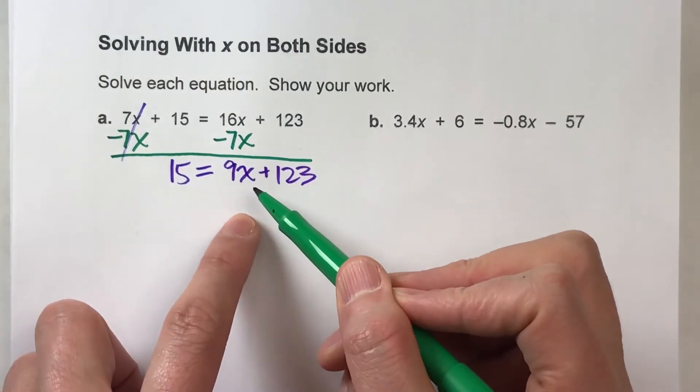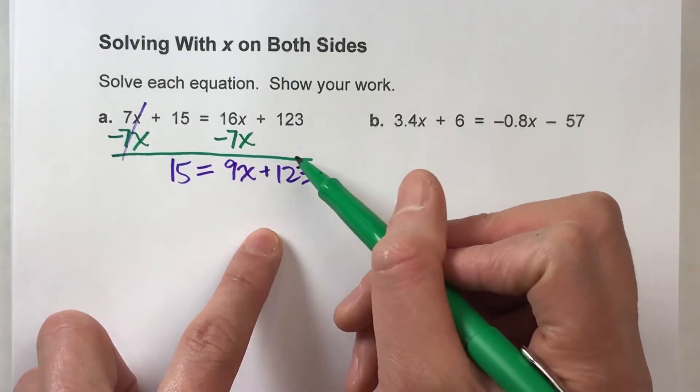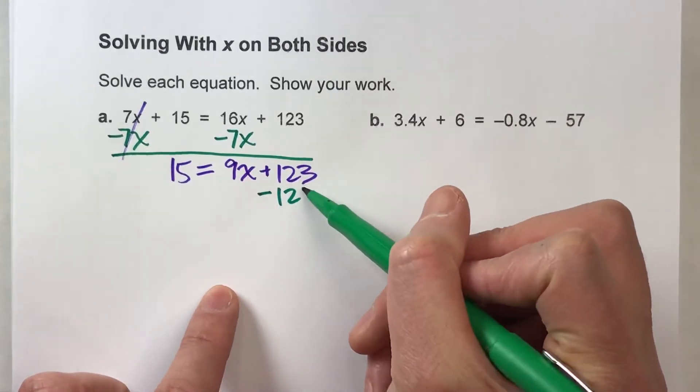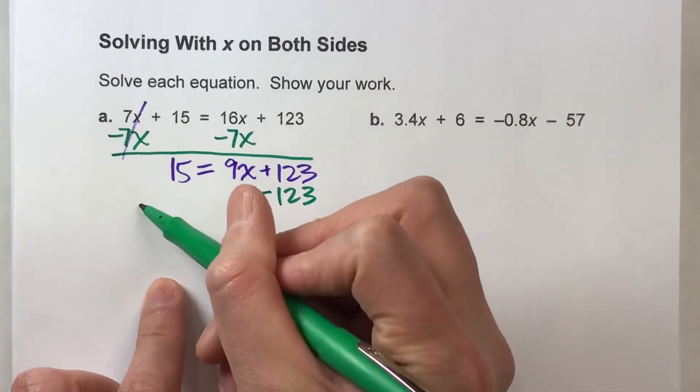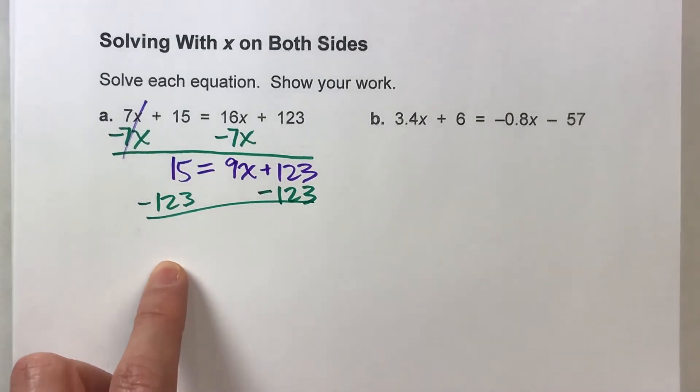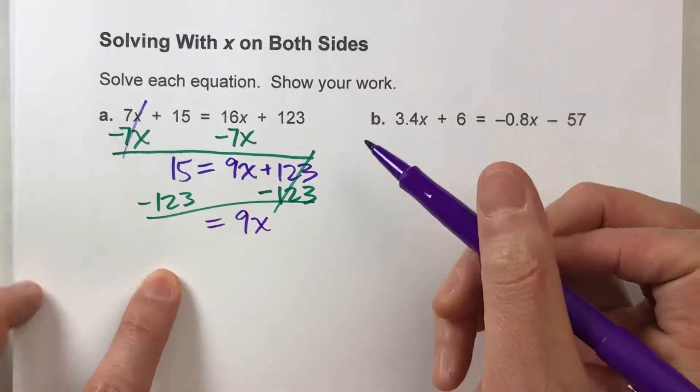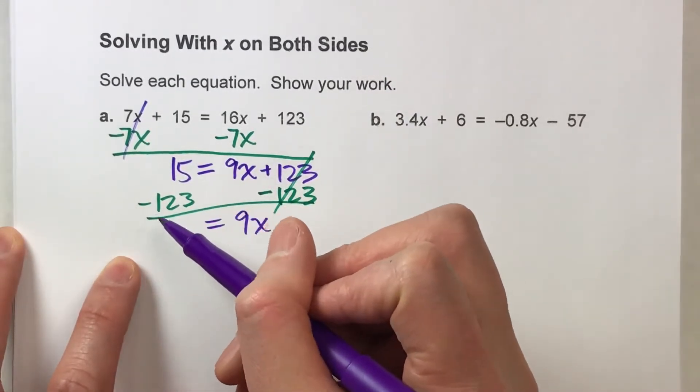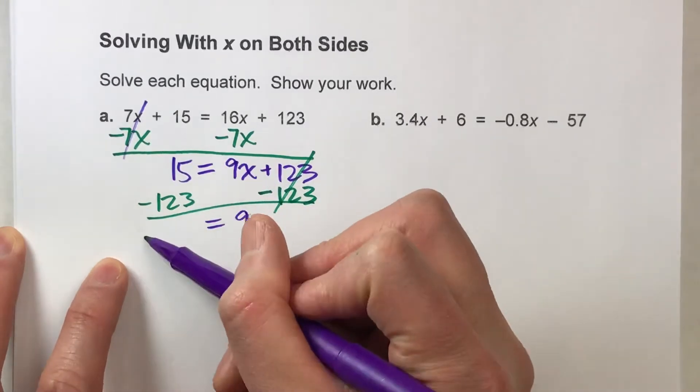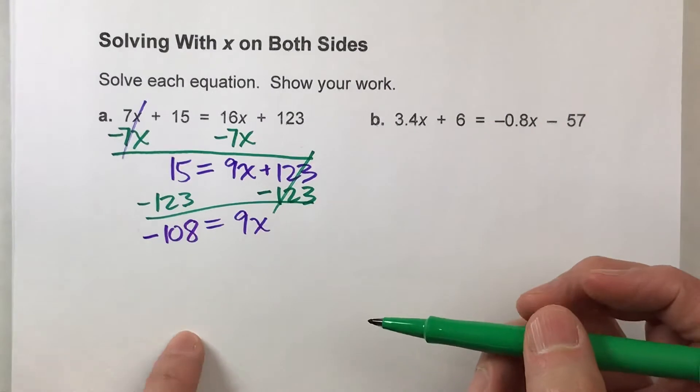We only have one group of x's now, so now let's undo everything around the x's, starting with the plus 123. So I'm going to subtract 123, but what I do to one side, I have to do to the other. So let's go. The 123's undo each other, the 9x drops down, the equals drops down, and 15 minus 123 is negative 108. Be careful there.